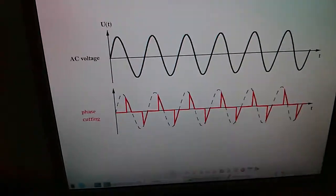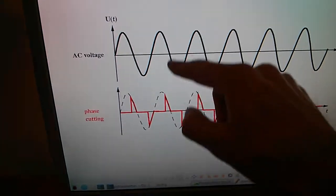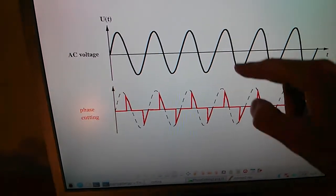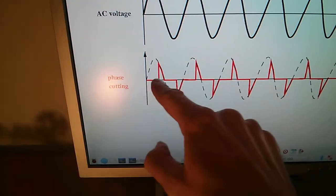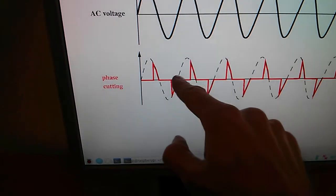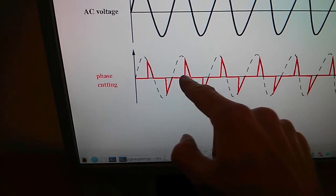Now let me explain to you what this circuit actually does. So this is our sinusoidal line voltage. And the dimmer is now applying this so-called phase cutting method. This is illustrated in red. So a certain fraction of each half wave is cut away.